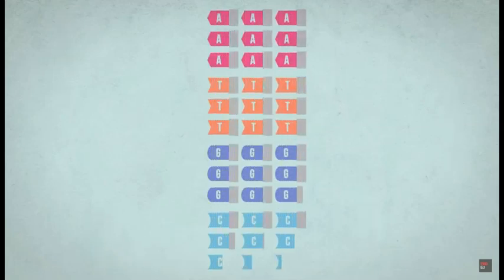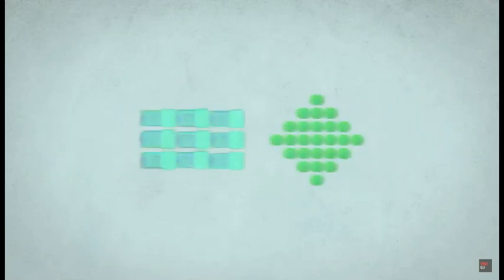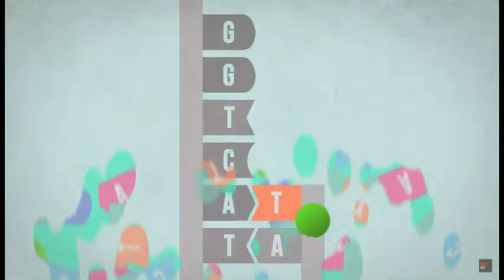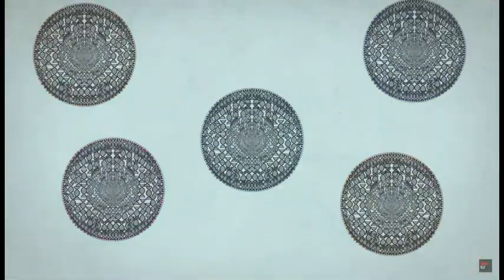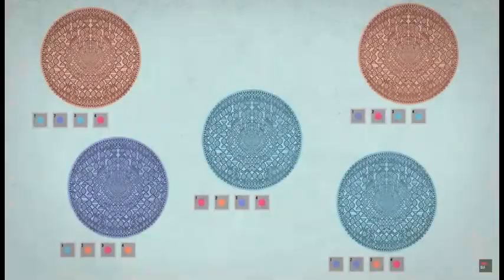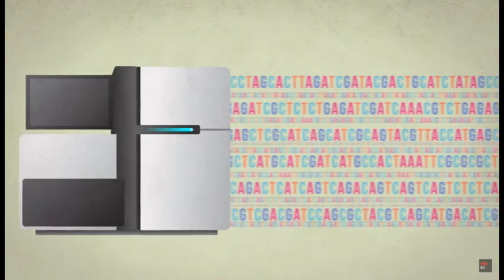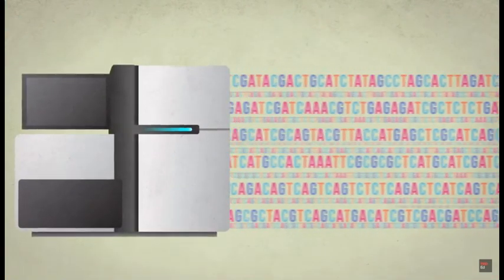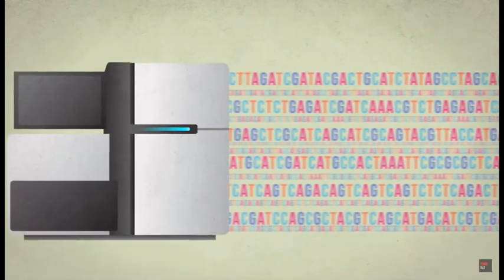To read the genome pieces, scientists make a batch of special letters each with a distinct color. A mixture of these special colored letters and enzymes are added to the genome being read. At each spot on the genome, one of the special letters binds to its opposite letter, creating a double-stranded piece of DNA with a colorful spot at each letter. Scientists then take pictures of each snippet of genome, and seeing the order of the colors allows them to read the sequence. The sequences of each of these millions of pieces of DNA are stitched together using computer programs to create a complete sequence of the entire genome.